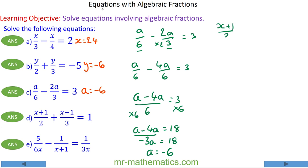And next we have x plus 1 over 2 plus x minus 1 over 3 equals 1. So again I'm going to do a similar method to what I did with question c. I'm going to make a common denominator.